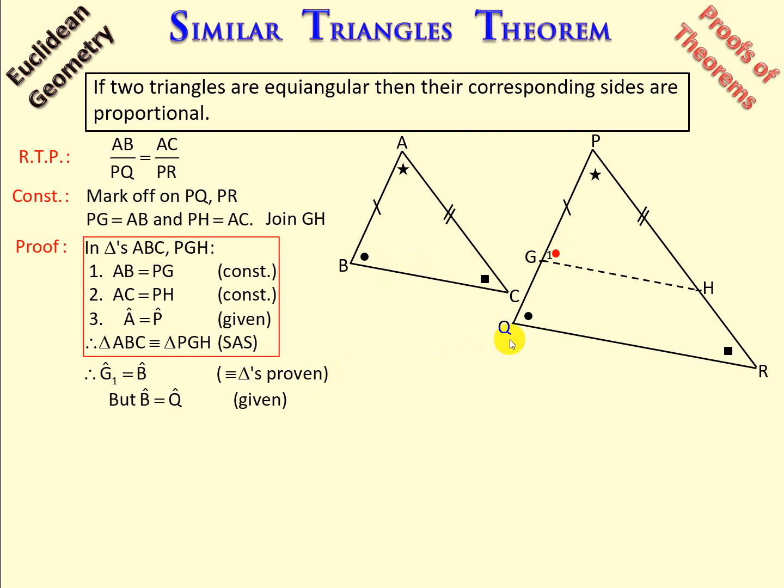But we know that B is equal to Q, because the triangles were equiangular, so that part was given. So we can now conclude that G1 is equal to angle Q.